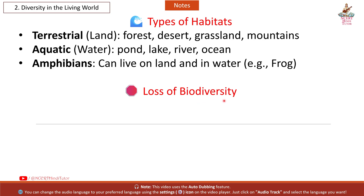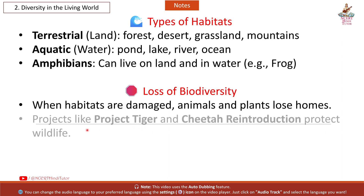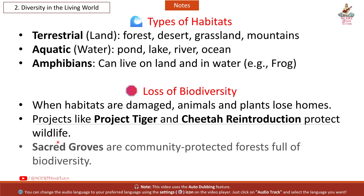Loss of Biodiversity: When habitats are damaged, animals and plants lose their homes. Projects like Project Tiger and cheetah reintroduction help protect wildlife. Sacred groves are community-protected forests full of biodiversity.